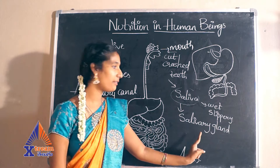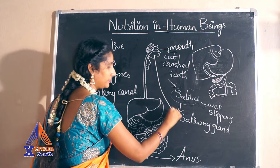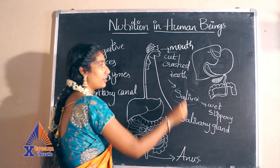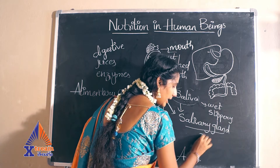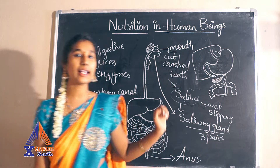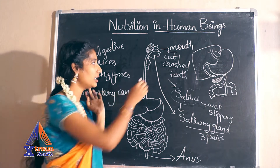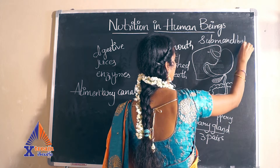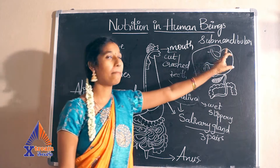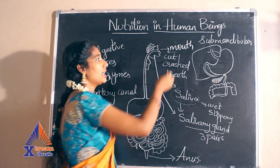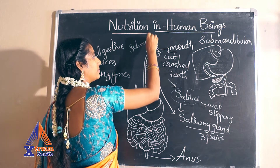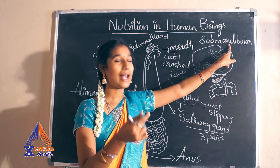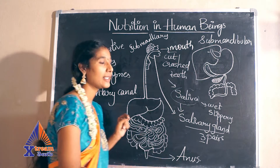The salivary glands produce saliva in the mouth and help make the food wet. There are three pairs of salivary glands. The first pair is located on either side of the jaw and is called the submandibular glands. The second pair is located below the tongue and is called the sub-maxillary glands. The third pair is the parotid glands, located at the side of your ears.